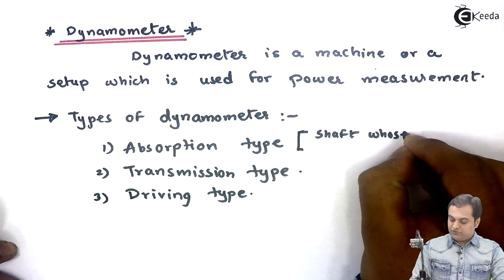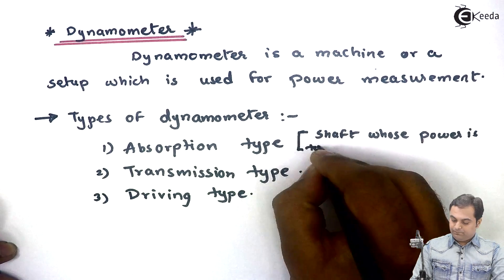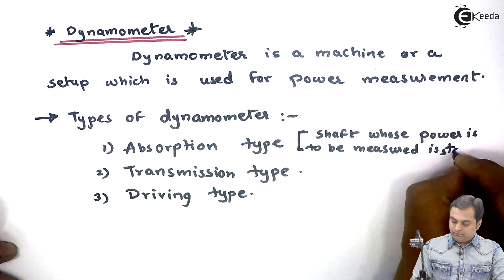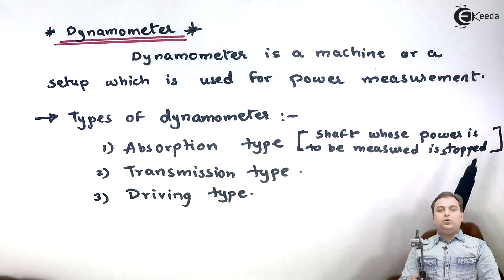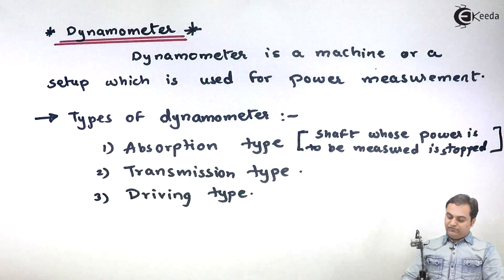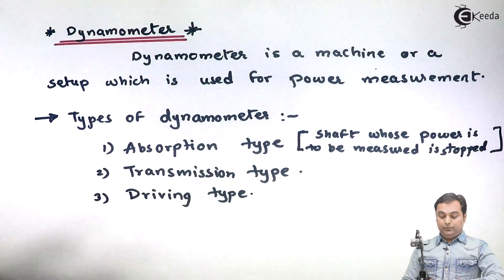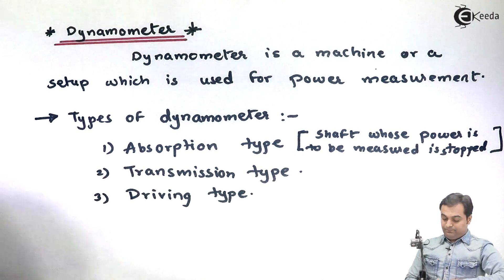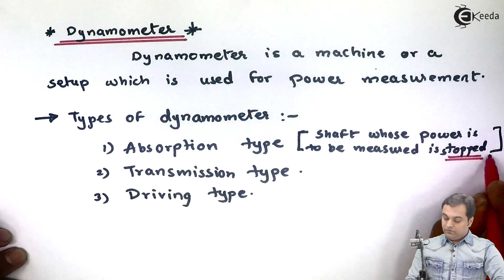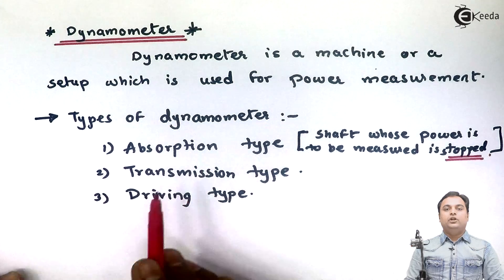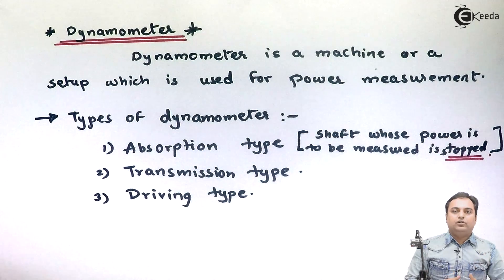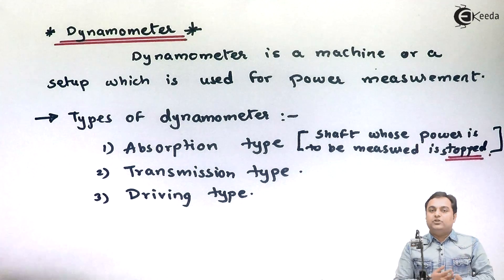In absorption type dynamometers, the shaft whose power is to be measured is to be stopped. This is a very important point. That is why it's called absorption type, because it is absorbing the power of the shaft and then measuring how much power is there.